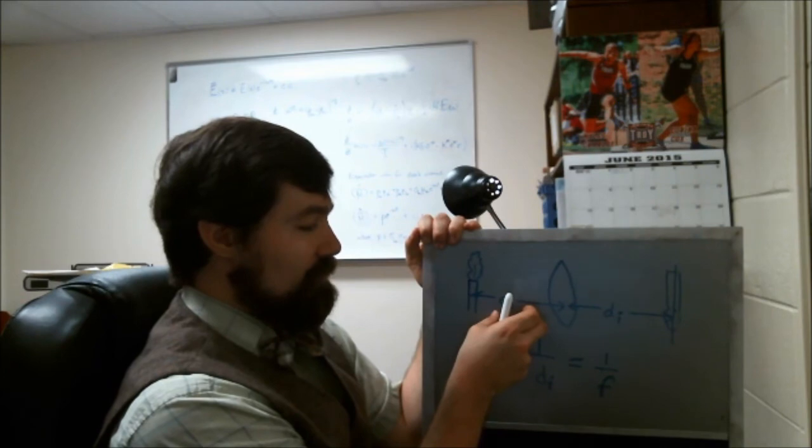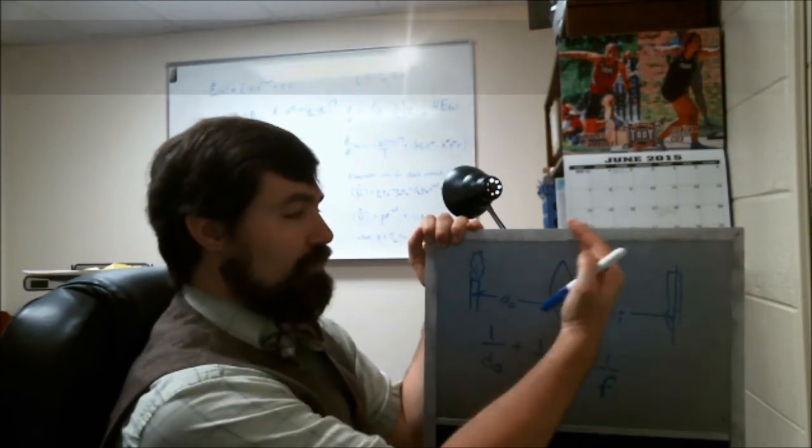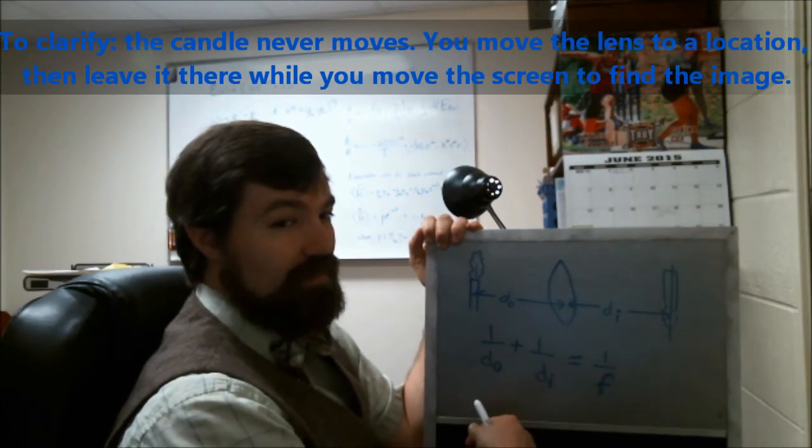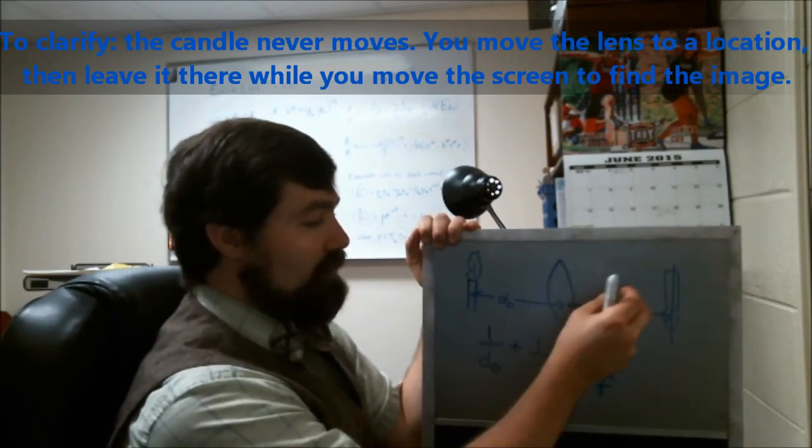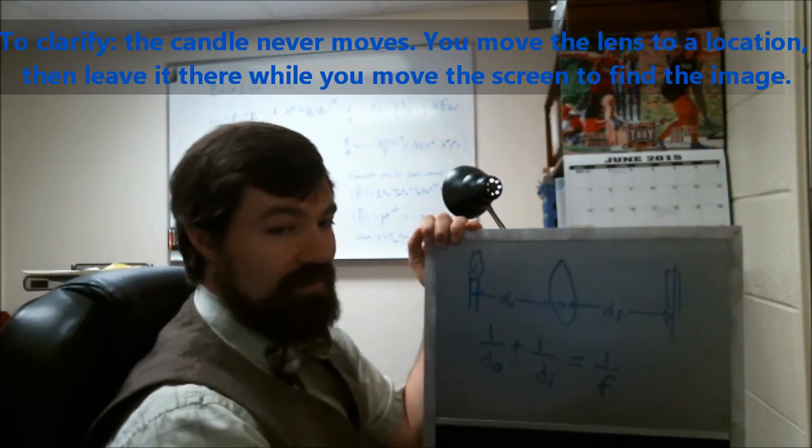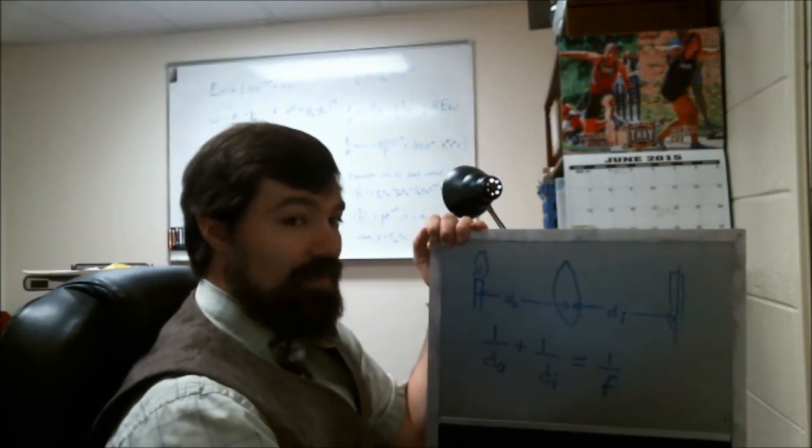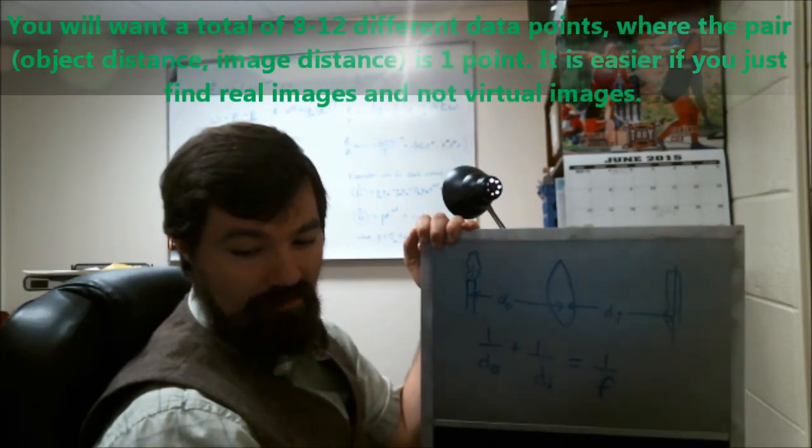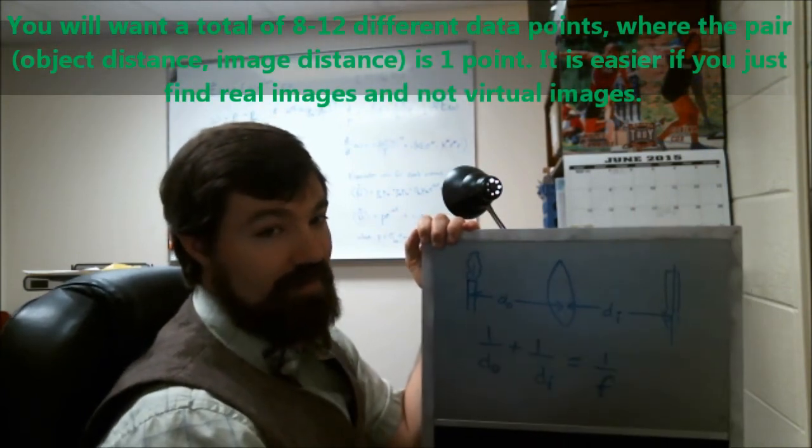So what you're going to do with this third method is you're actually going to set up your candle somewhere stationary. You'll move the lens somewhere. You'll find where the image is. You'll measure both distances. You'll record that data. Then you'll move the lens again. You'll find where the new image is formed. You'll record both of these distances. And so on. And you'll keep doing that until you've got maybe say 8 to 10 data points.